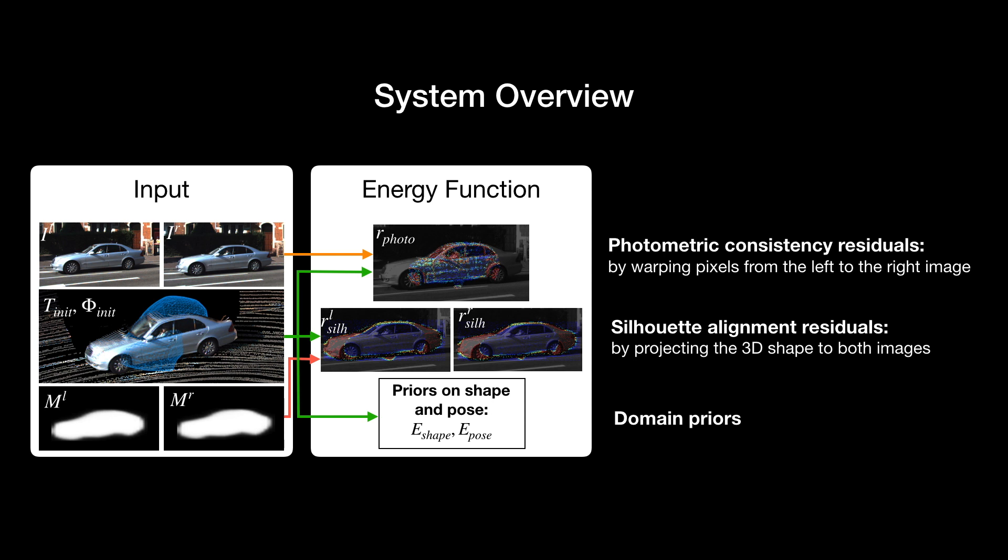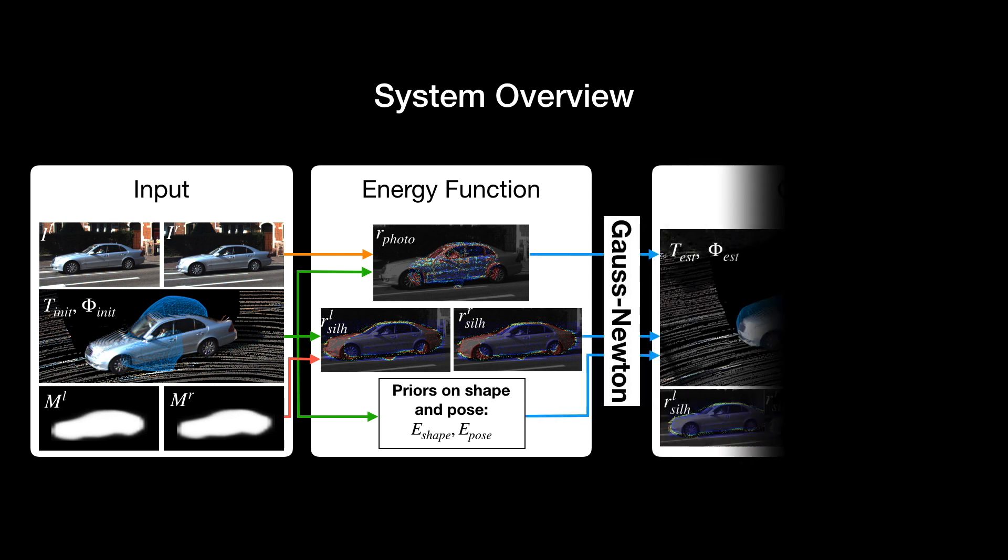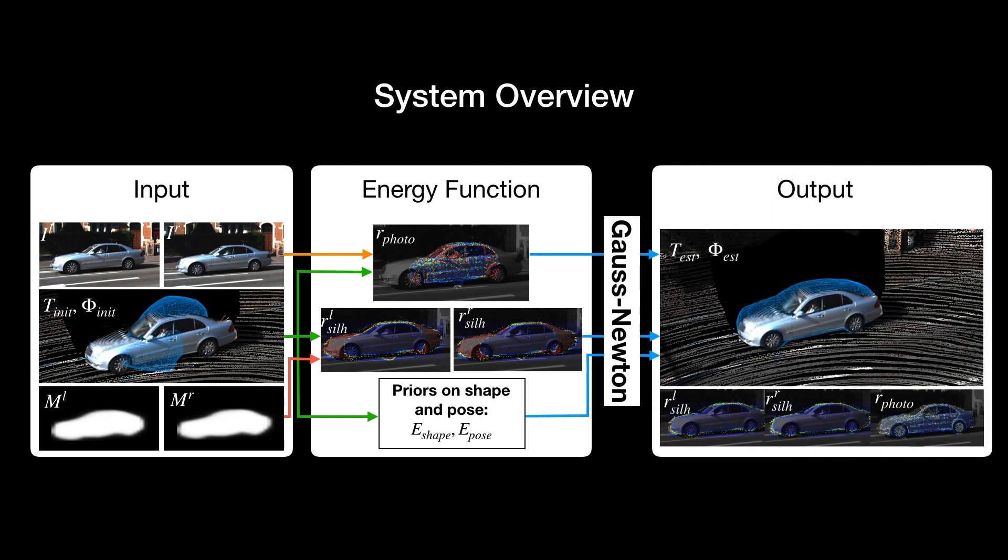In the last term, we integrate some domain priors. For example, a car can only locate on the road surface. Besides, the shape of a car cannot diverge too much from the mean shape of the class. We formulate the final energy function by summing up the three energy terms and optimize it using the Gauss-Newton method. As output, our method delivers the refined 3D pose and shape of the car. At bottom, you can see the residuals after the optimization.